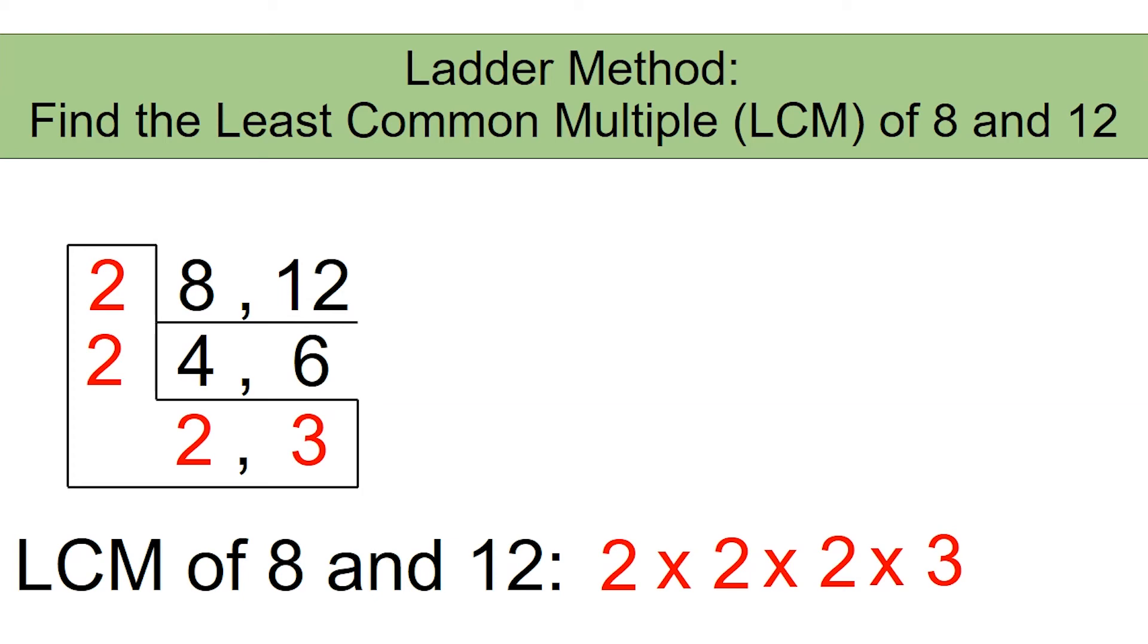2 times 2 is 4. 4 times 2 is 8. 8 times 3 is 24. So the least common multiple or the LCM of 8 and 12 is 24.